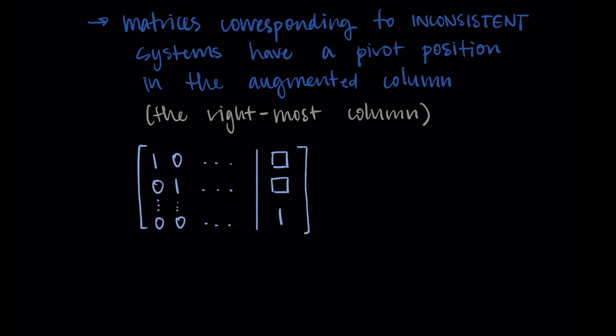an inconsistent system will eventually have a row that looks like zeros on the left-hand side and then a one on the right-hand side in that augmented column. This corresponds to the statement zero equals one, which we know is not true. So this pivot in the augmented column tells us that the system is inconsistent.